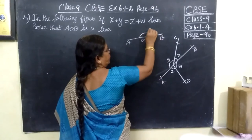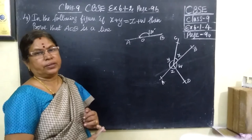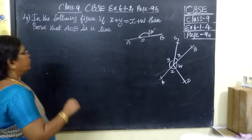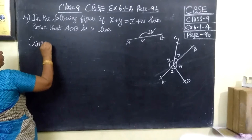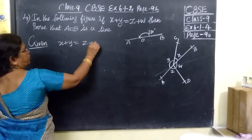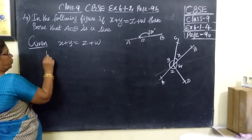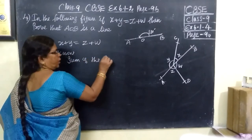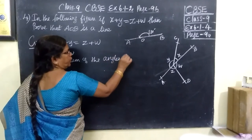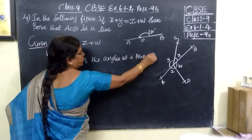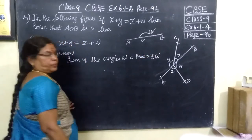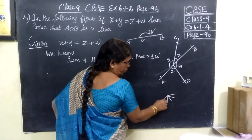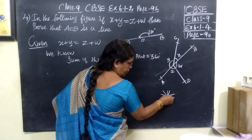you have to prove the sum of the angles equals 180 degrees. We know the sum of all the adjacent angles on a line is 180 degrees. So, what is given? This is given: X plus Y equals Z plus W. We know the sum of the angles at a point equals 360 degrees. It is a point. The sum of the angles — if you add all these angles, this is equal to 360 degrees.